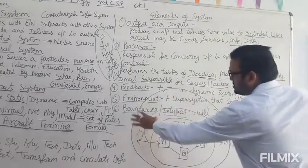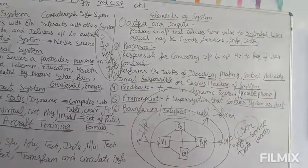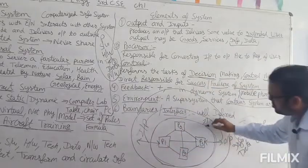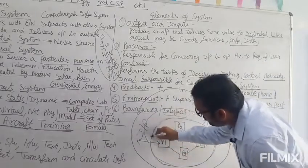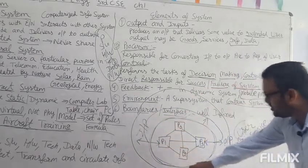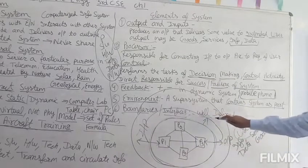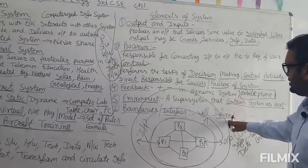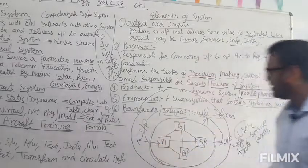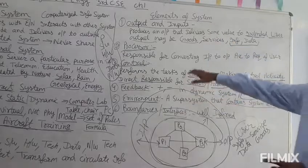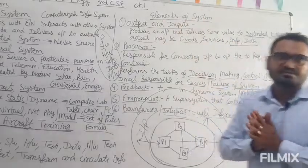Number six is boundaries and interfaces. The boundary of a system or interface of the system may be well defined. Borders are well defined and interface may be well defined. So these six elements are the elements of a system.